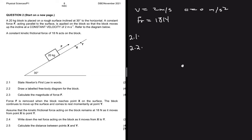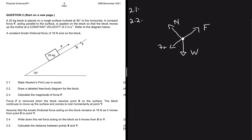Question 2.2 says draw a labelled free body diagram for the block. So that's our block. We're told that force F is applied on the block, and since it is resting on a surface we have a normal force. We also always have weight, and we're told there is a frictional force opposing the motion at 18 Newtons. That's our free body diagram.